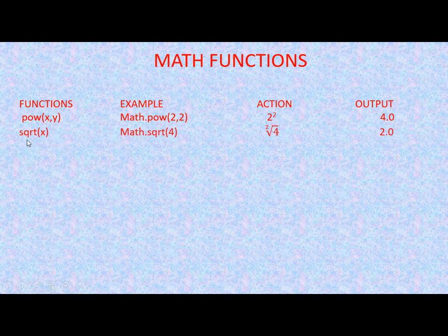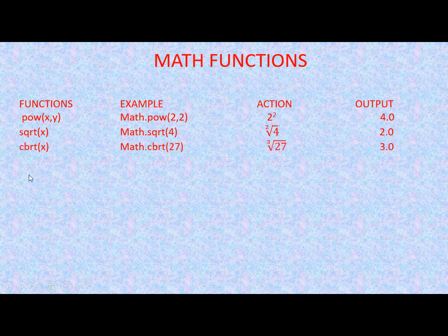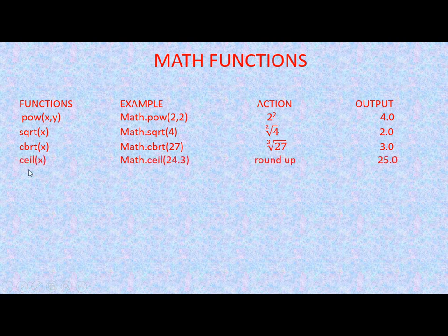The next function is sqrt(x) — this is the square root of a number X. The syntax is Math.sqrt, and suppose the number is 4, so this is going to find the square root of 4 and the output will be 2. Similarly, we have cube root — cbrt — that is Math.cbrt(27), so this function will find the cube root of 27 and the answer is 3.